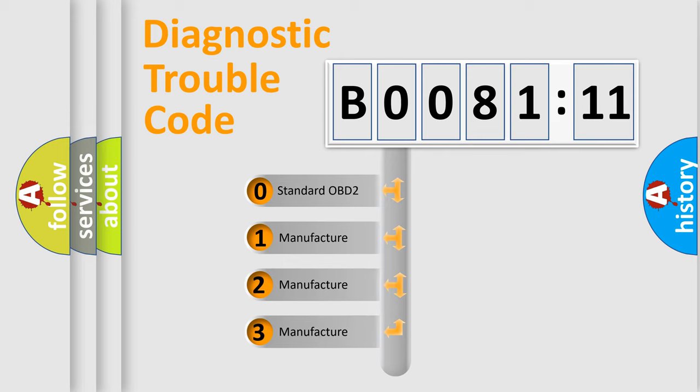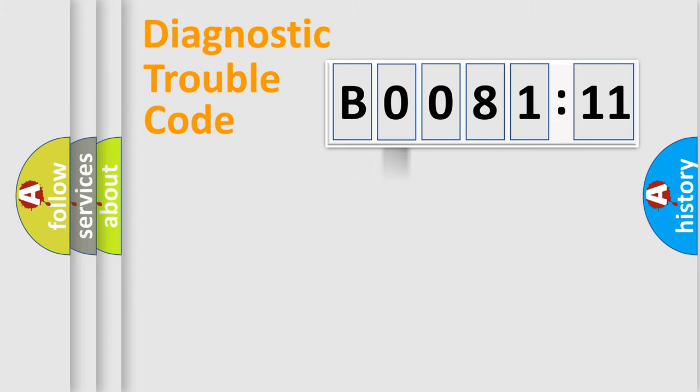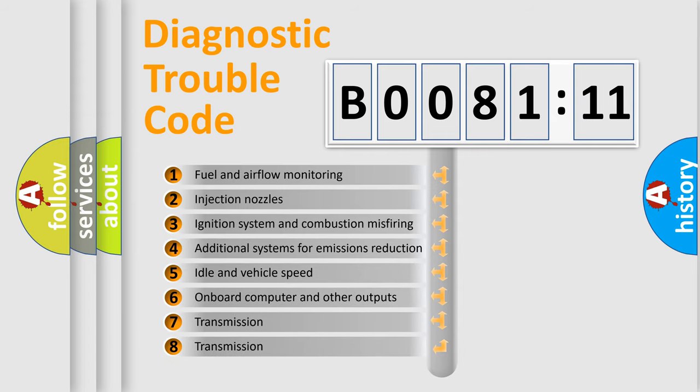If the second character is expressed as zero, it is a standardized error. In the case of numbers 1, 2, or 3, it is a more prestigious expression of the car-specific error.